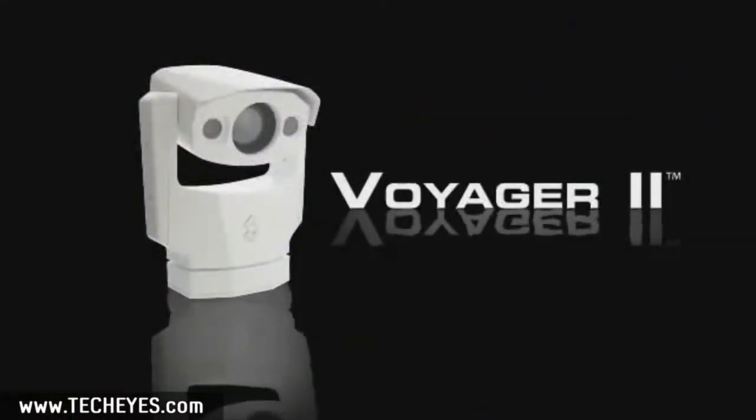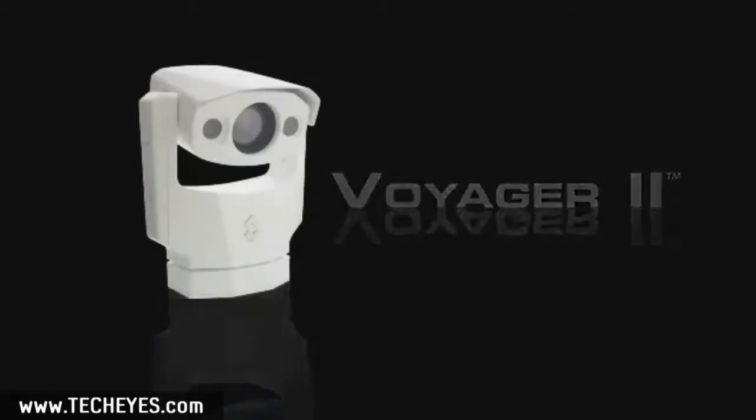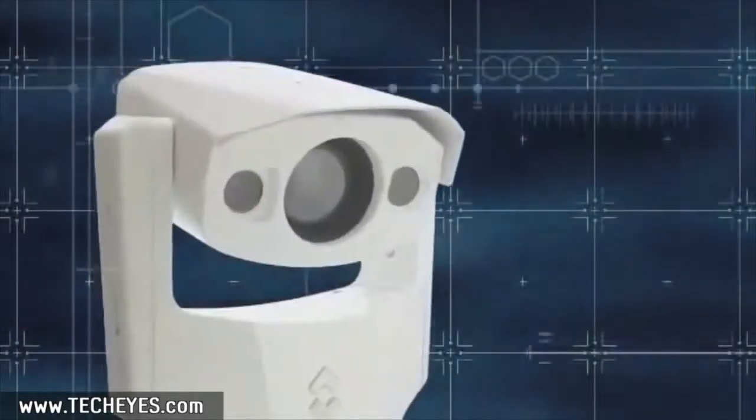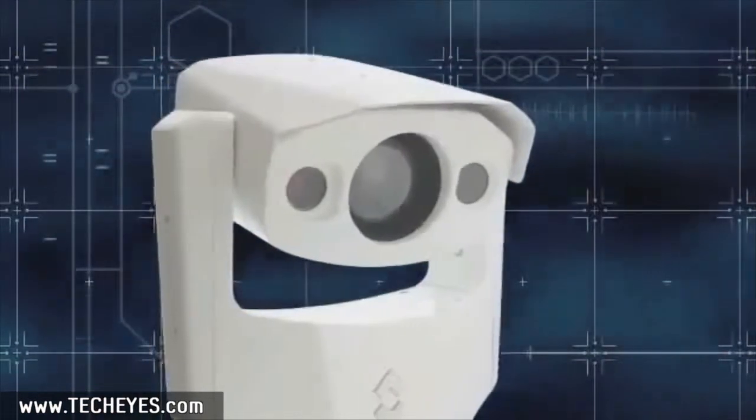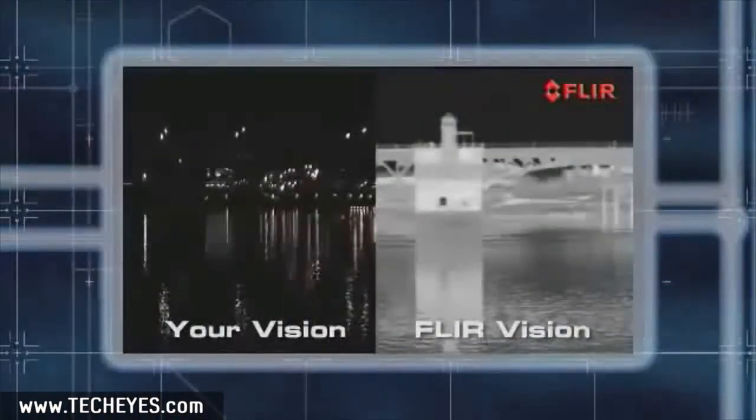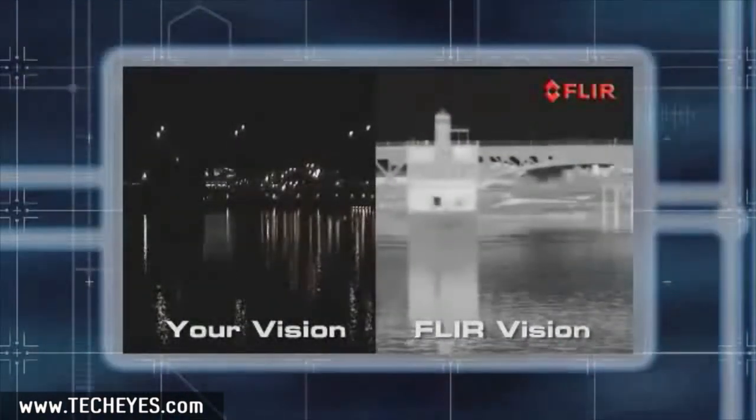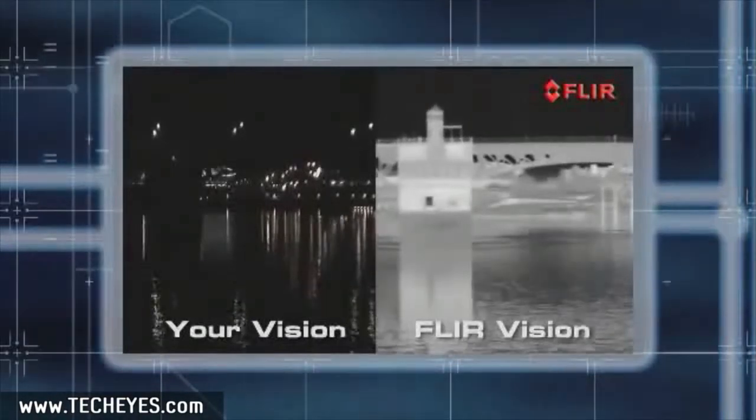FLIR's Voyager 2 gives you the freedom to navigate safely through total darkness. Voyager 2 is a stabilized multi-camera system that takes over where your other marine electronics leave off. Voyager 2 lets you see what's out there night or day, good weather or bad.